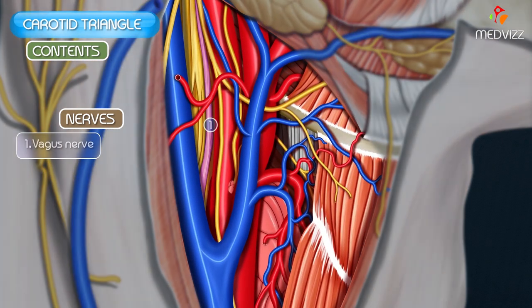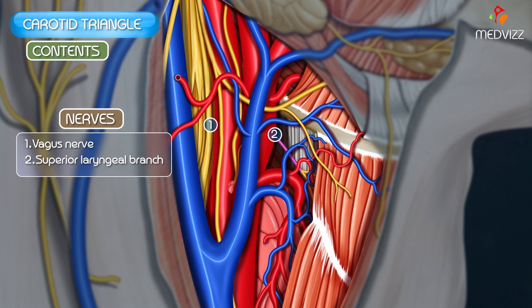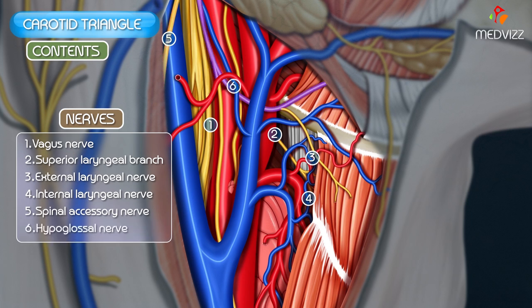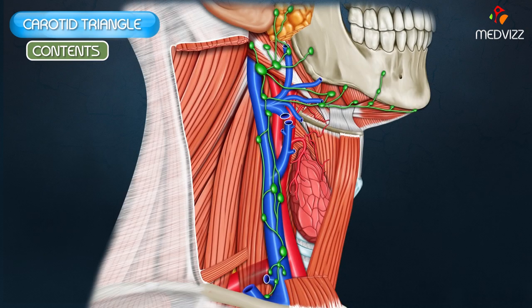The important nerves in the carotid triangle include the vagus nerve. Along with this, one can find the superior laryngeal branch of the vagus, which divides into external and internal laryngeal nerves. Other nerves present are the spinal accessory nerve, the hypoglossal nerve, and the sympathetic chain, which runs vertically downwards posterior to the carotid sheath.